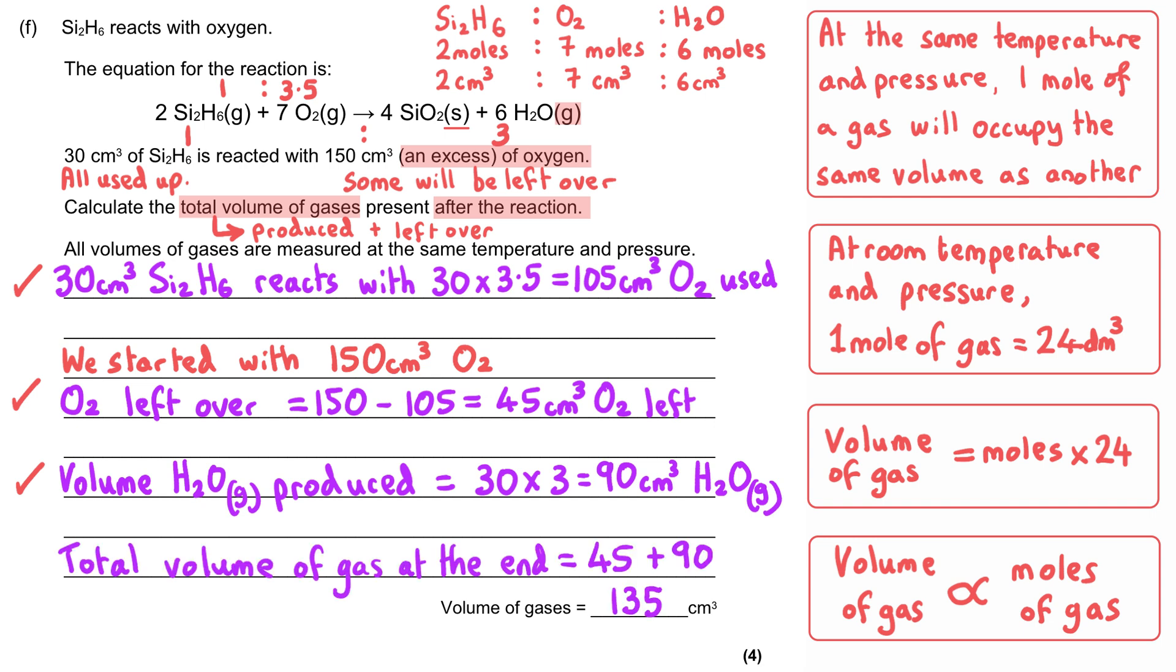The final task is to work out the total volume at the end of the reaction. We take our 45 cm³ of oxygen that was left over and add that to the 90 cm³ of water vapor that was produced, and we get a final volume of 135 cm³. This is our final mark of the four.